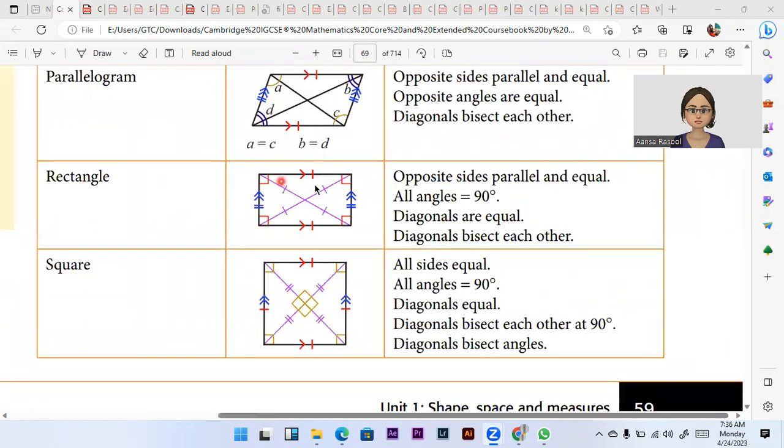Next is rectangle. In rectangle, all angles are at 90 degree. And all angles are at 90 degree. These two sides are parallel and these two sides are parallel.